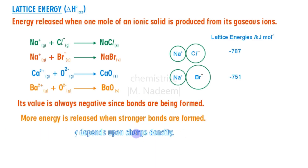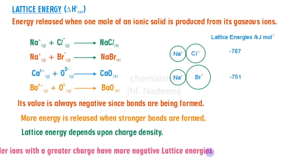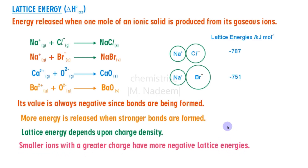Lattice energy depends on charge density, where charge density is charge per unit volume. We can say that smaller ions with a greater charge have more negative lattice energies, because smaller ions with greater charge have more charge density and form stronger ionic bonds.